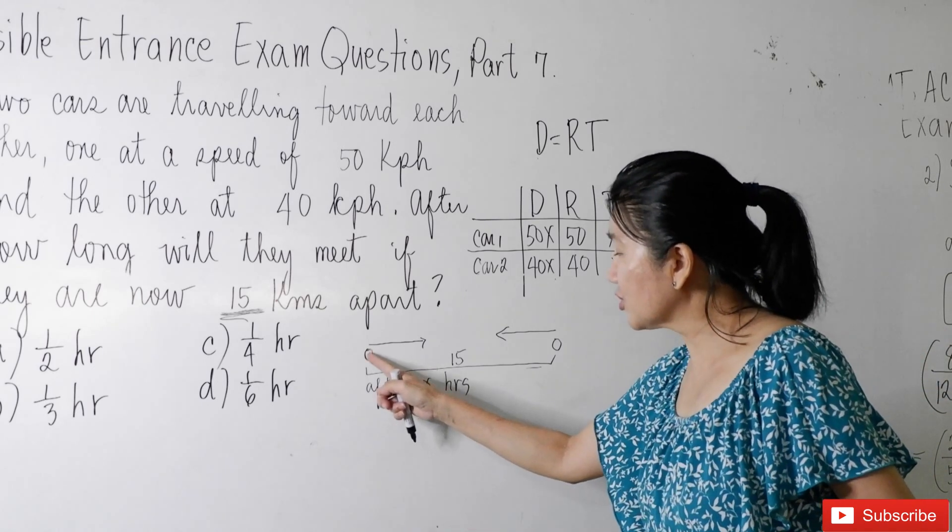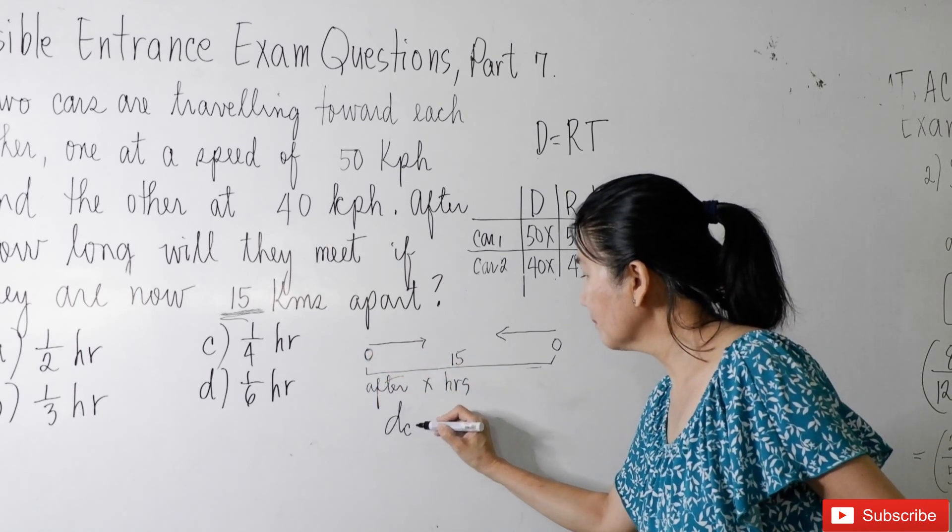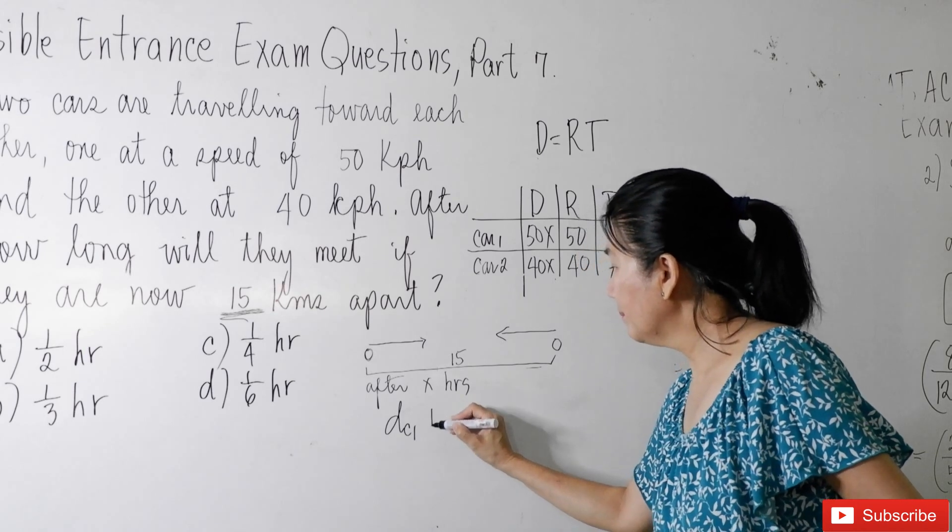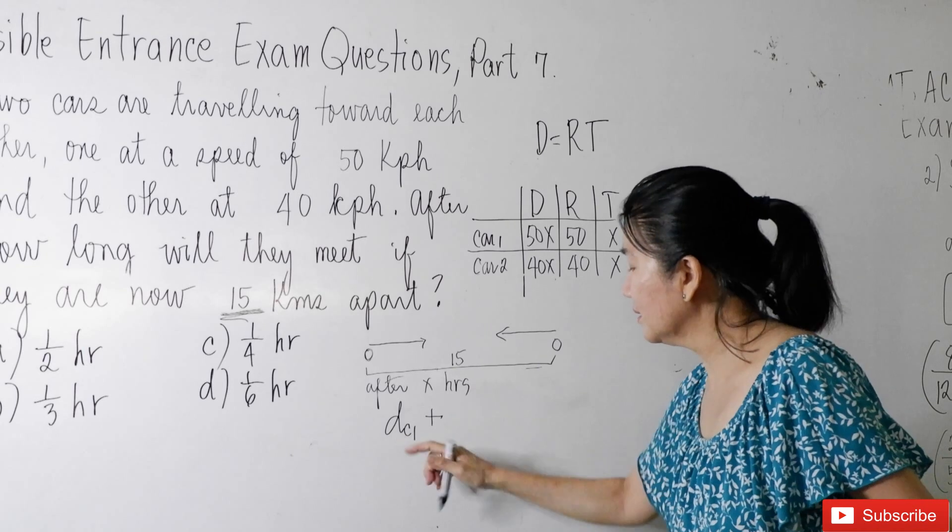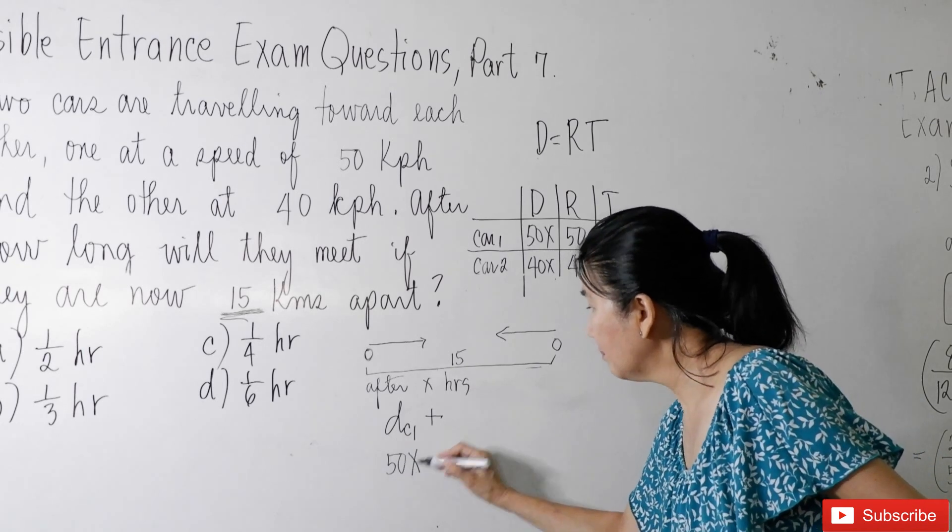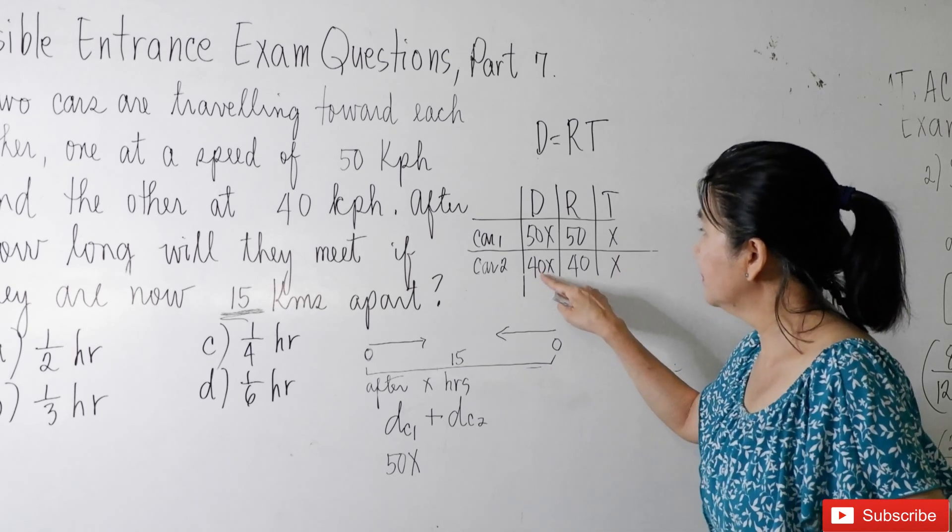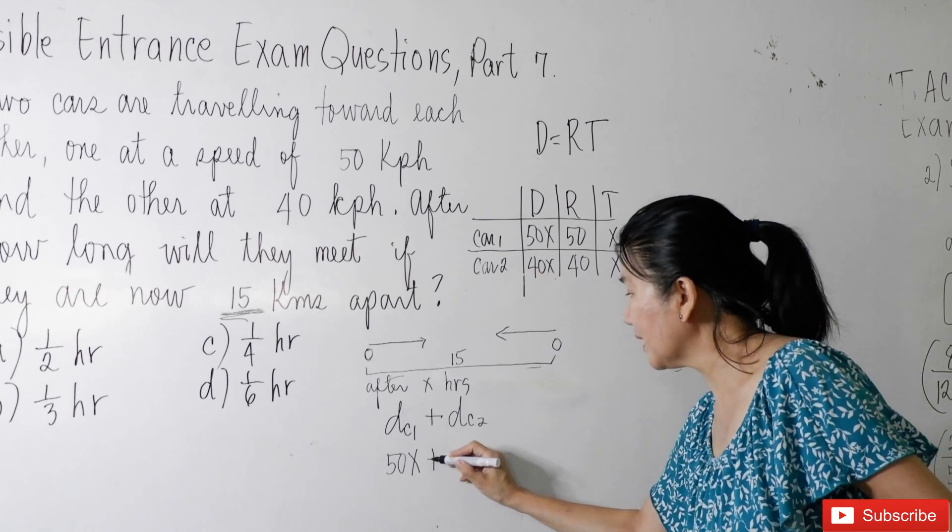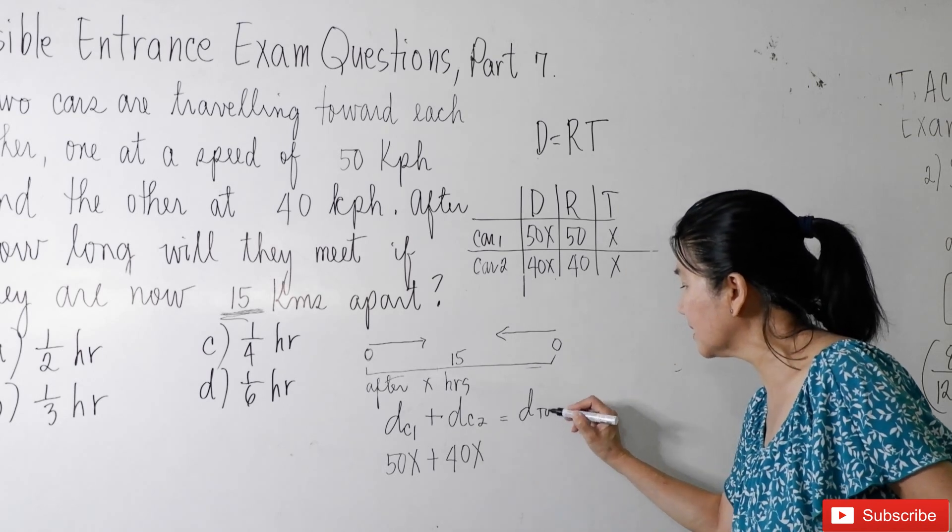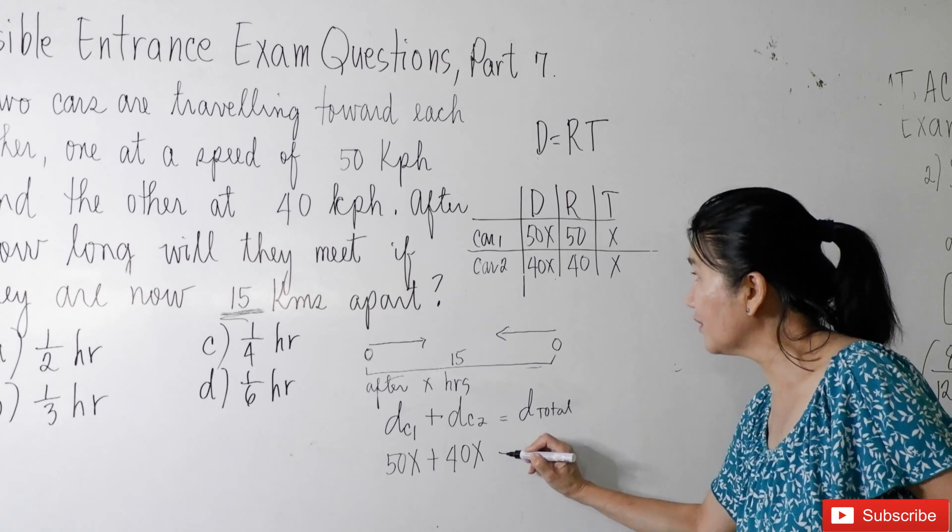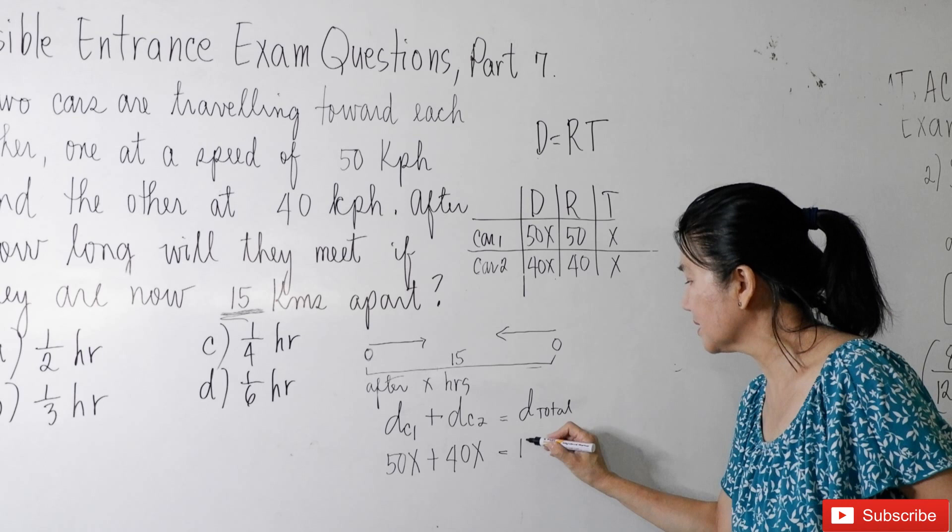So the distance traveled by car 1 will be 50x here. Plug it in. Plus, the distance traveled by car 2 is 40x will now be equal to the total distance traveled which is given in the problem to be 15 kilometers there.